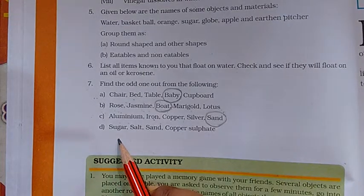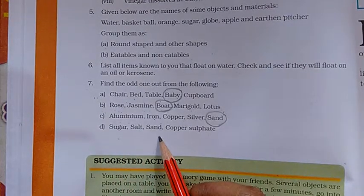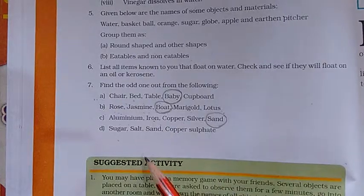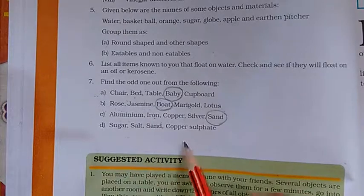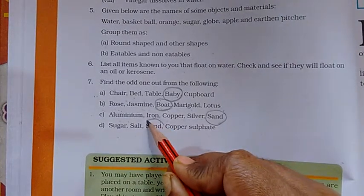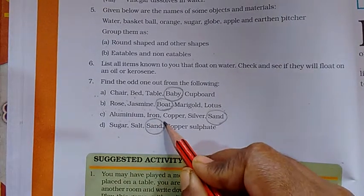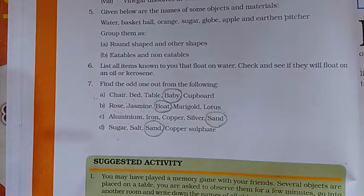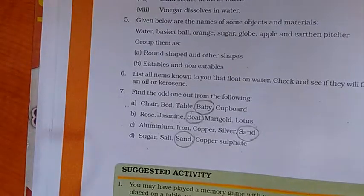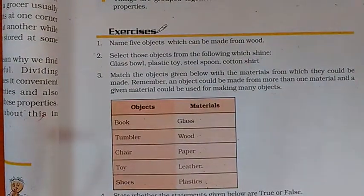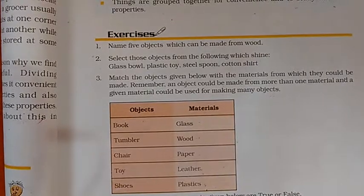Question D: Sugar, Salt, Sand, Copper Sulphate. Sugar, Salt, and Copper Sulphate are soluble in water, while Sand is not soluble in water. So Sand is the odd one among them. Thank you friends for watching. These are all the questions and answers for this chapter — sorting materials into groups. Bye.